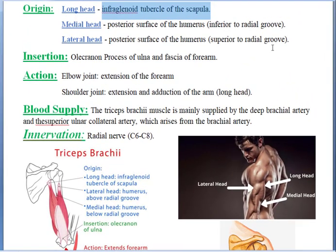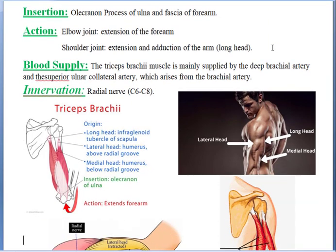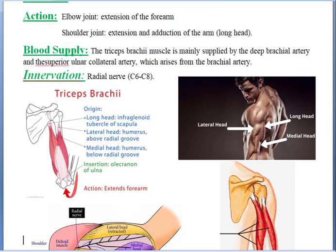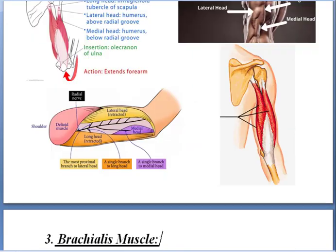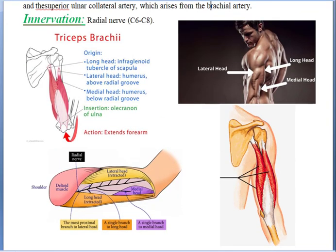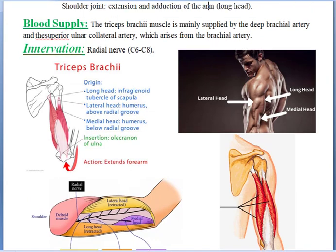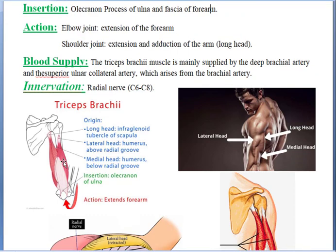What is its insertion? It inserts into the olecranon process of the ulna and the fascia of the forearm. You can see here the olecranon process of the ulna — that is where the triceps inserts.